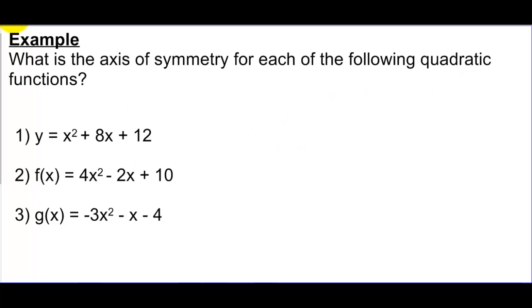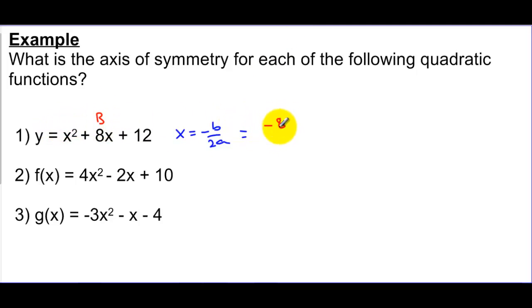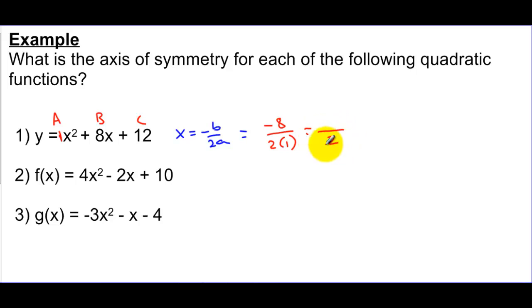Looking at this first equation, for the axis of symmetry we use negative b over 2a. My b value here is 8, so I say negative 8 over 2 times 1 — don't forget there's a 1 for a here. So that's 2 times 1, which is just 2. I get negative 8 over 2, so my axis of symmetry line is the vertical line x = -4.